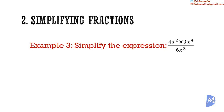Example 3. Simplify the expression: 4x squared multiplied by 3x to the 4th power, all divided by 6x cubed. Working out the numerator: 4x squared multiplied by 3x to the 4th power. 4 multiplied by 3 is equal to 12. And remember, when we are multiplying quantities with the same base, we add the powers. So x squared multiplied by x to the 4th power is equal to x to the 6th power. This gives 12x to the 6th power.